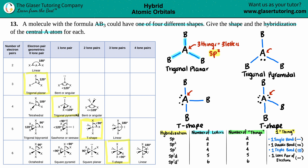For the second shape, the central atom has one single bond — one thing — another single bond — two things — the third single bond — three things — and one lone pair — four things. Four things means four letters. That's sp3.